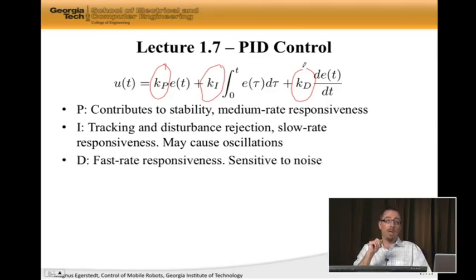Now, the D part, since it's not responding to actual error values but the changes in the error values, it's typically faster responsiveness. Something is about to happen, well, the rate is changing, so the derivative part kicks in, typically faster.